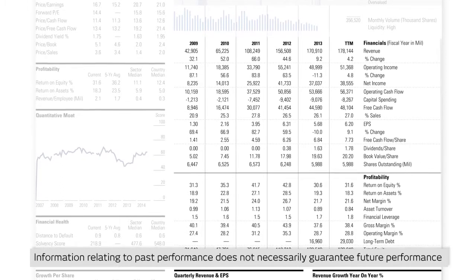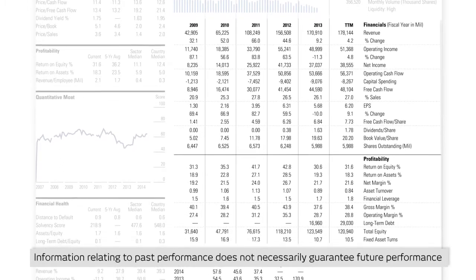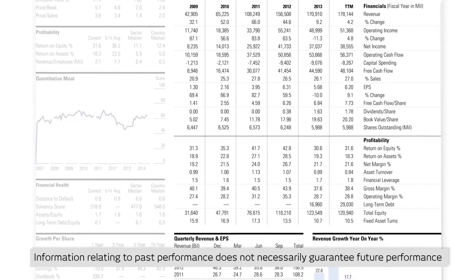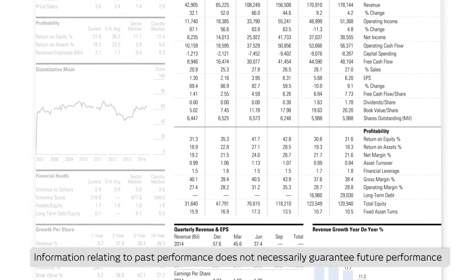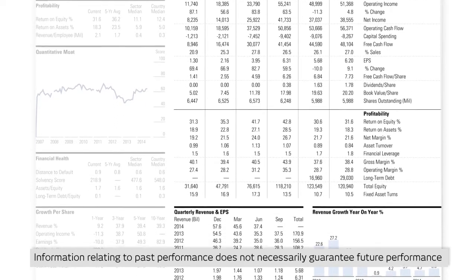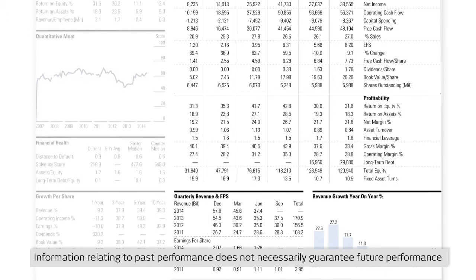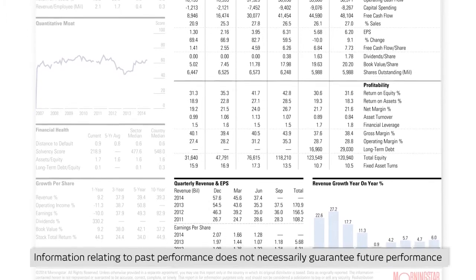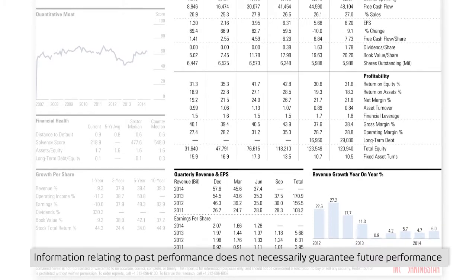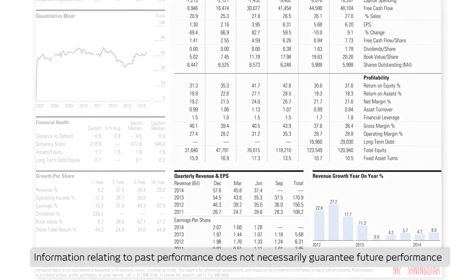The most important historical fundamental data is shown here. It includes the last five years of revenue, operating income, earnings and dividends per share, book value, and profitability ratios such as return on equity and gross margin.